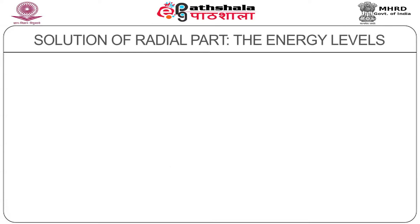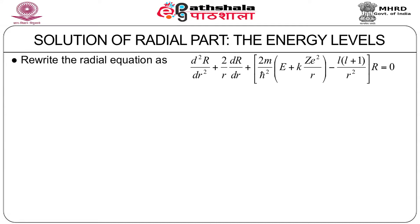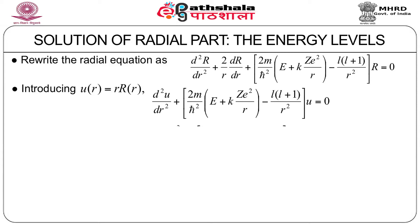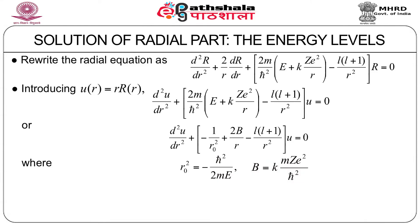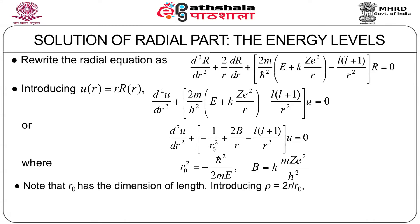Now the solution of the radial part gives the energy levels. We can rewrite the radial part of the equation by introducing a new variable U(r) = r·R(r), giving the radial equation in terms of U. We introduce R₀² = ℏ²/(2mE) and a constant B = kmze²/ℏ², just for convenience. Note that R₀ has a dimension of length. Introducing yet another new variable ρ = 2r/R₀, which is dimensionless.